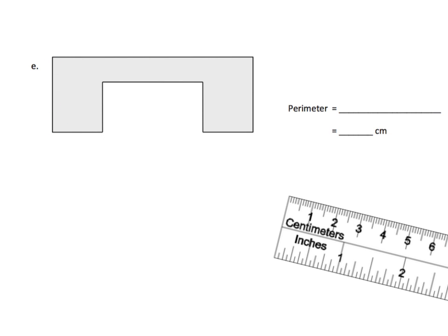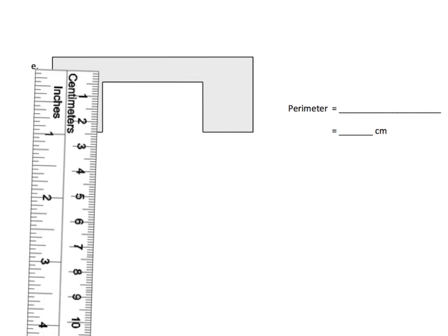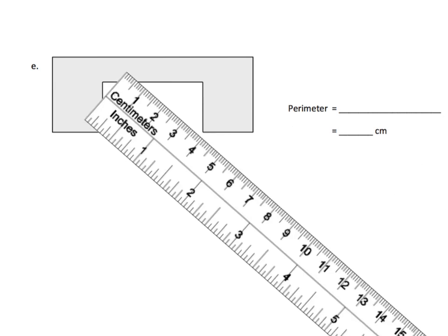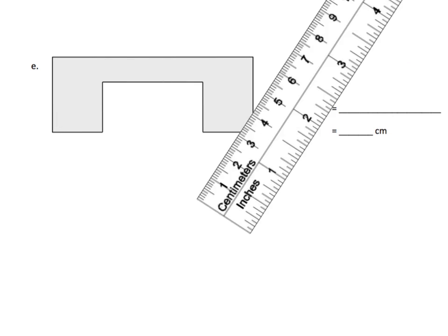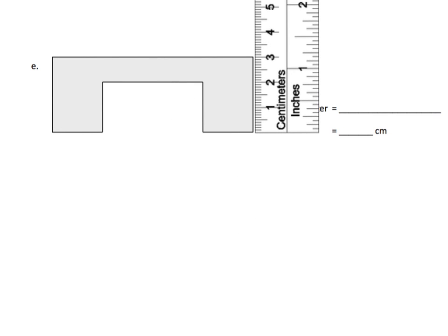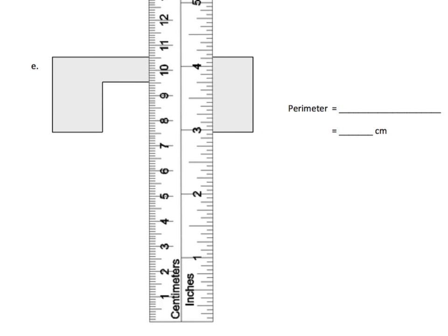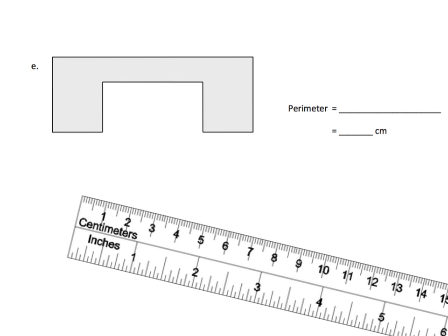We're going to measure all of the sides using a ruler. For this irregular shape, we need to track the lengths of all the different sides. Counting them out: that's the first length, second, third, fourth, fifth, sixth, seventh, and finally the eighth length. We've got a lot of measuring to do, and we'll let students go ahead and do that.